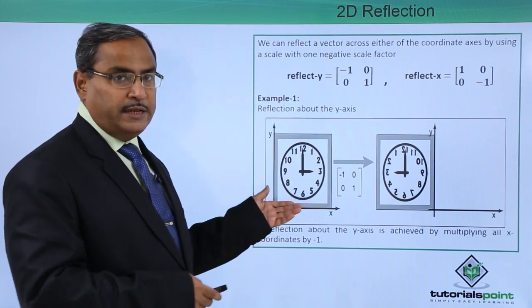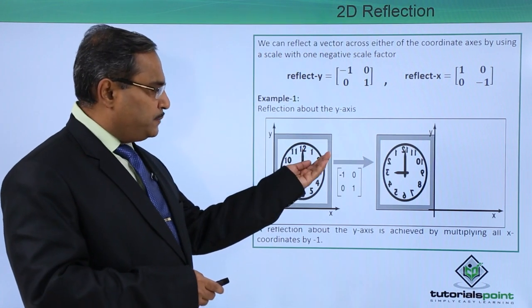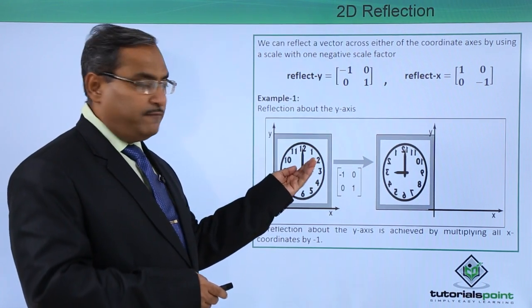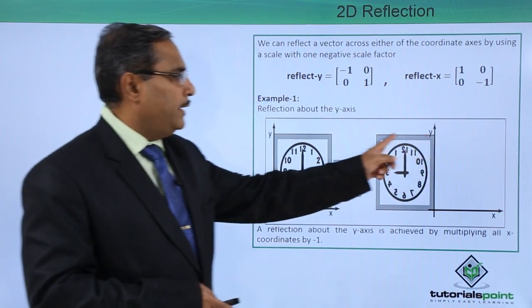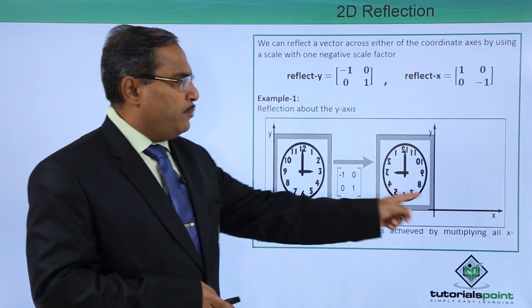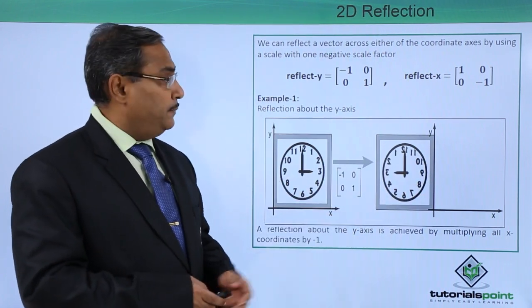This is one image that is given. Consider this point. When this particular image gets reflected along the y-axis, the same point which was here will be coming here. It will remain with the same y which was there, but only the x will be negative.